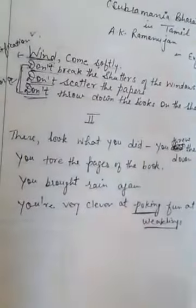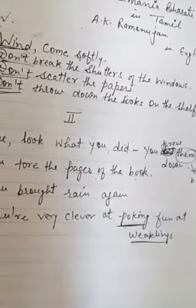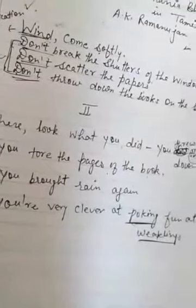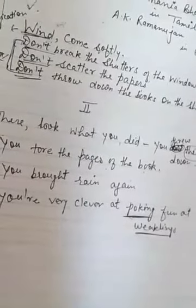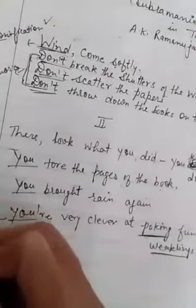So here, 'them' refers to books. When we read the first lines, don't throw down the books on the shelf, but it was not heard. The poet blames that wind has thrown all the books down and torn the pages, then brought the rain again. Wind harms and terrifies the weaklings and makes their fun. We have also seen: you, you, you, you - this is again anaphora. And wind is personified here.